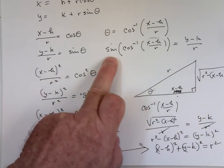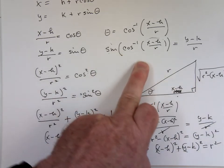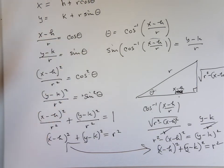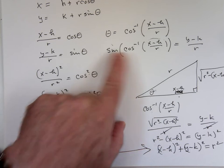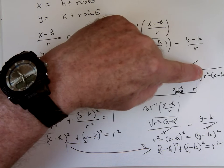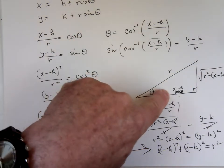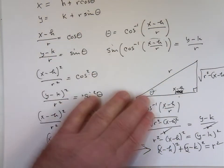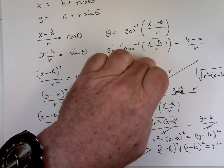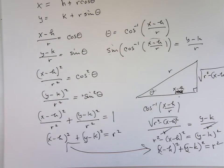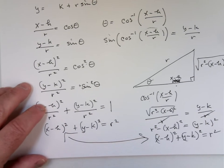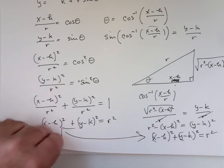You could find the tangent, secant, cosecant — anything of that inverse cosine — by using the right triangle. There's no question the squaring method is the better choice, and that's the way you do it. But if you run across things like this, you handle them with right triangles. Any other questions on homework?